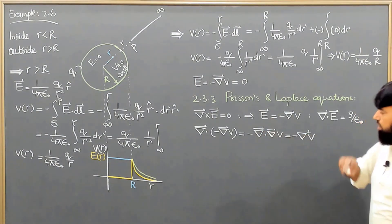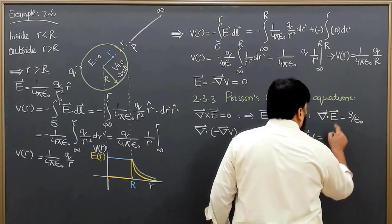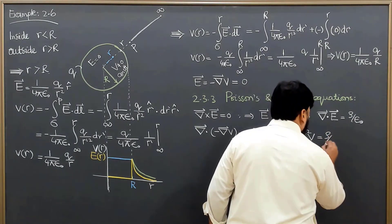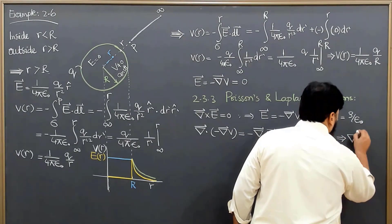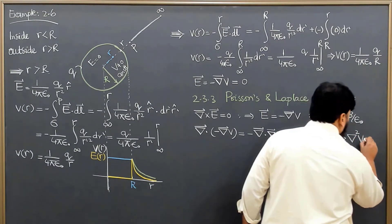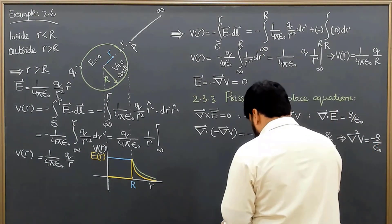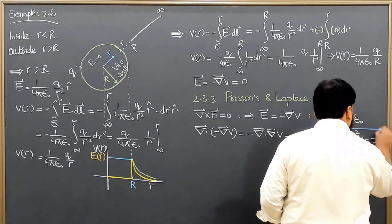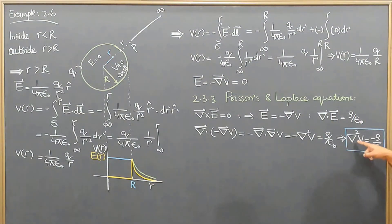This is equal to ρ over ε₀, so I can write here ρ/ε₀, and this implies that ∇²V = -ρ/ε₀. This equation is the Poisson's equation. It relates the potential with the charge density.